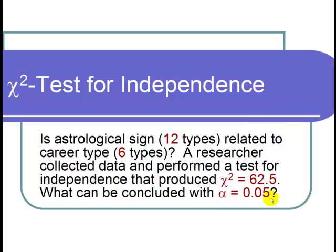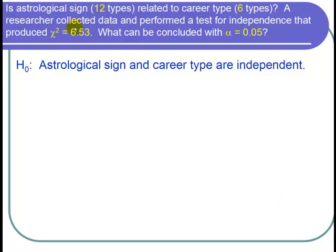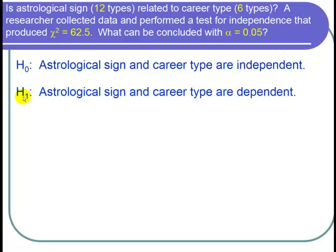So let's start out by writing down the null hypothesis. Since we want to find out if astrological sign and career type are related or independent or not, H-naught is that astrological sign and career type are independent. And then H-1 is that astrological sign and career type are dependent.